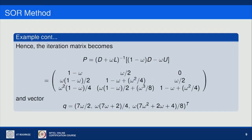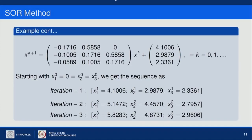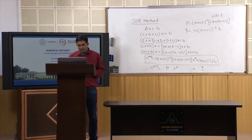Using this optimal omega value, the final iteration matrix and column vector Q are determined, and the scheme is written as x^(k+1) = P·x^(k) + Q, starting from k equals 0. Using the initial guess (0, 0, 0), in iteration 1 we get x1, x2, x3; in iteration 2 the next values; and in iteration 3 the values converge further. This is all about the successive over-relaxation scheme.